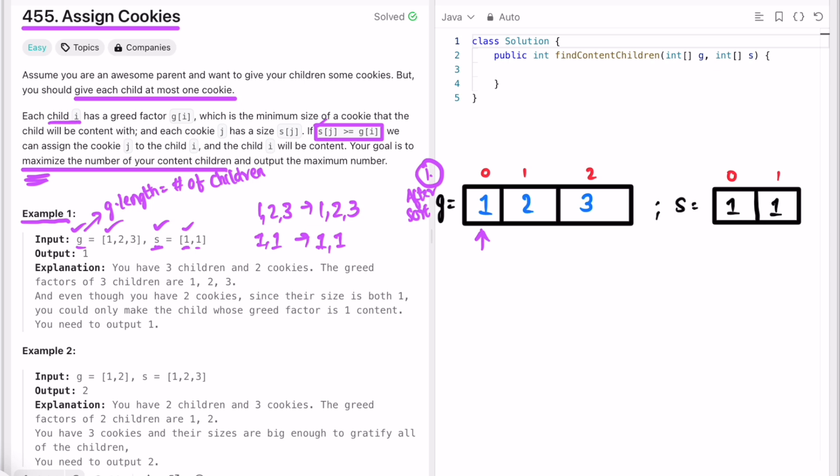After sorting, these are the array elements. We assign two pointers: this is the child pointer and this is the cookie pointer. We iterate both arrays from left to right, both starting from the zeroth index. We use the child pointer to iterate through the g array and the cookie pointer to iterate through the s array. Now we check if the cookie size is greater than or equal to the greed of the child, which is also one.